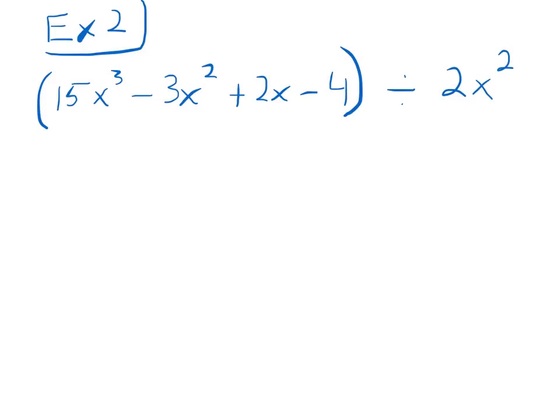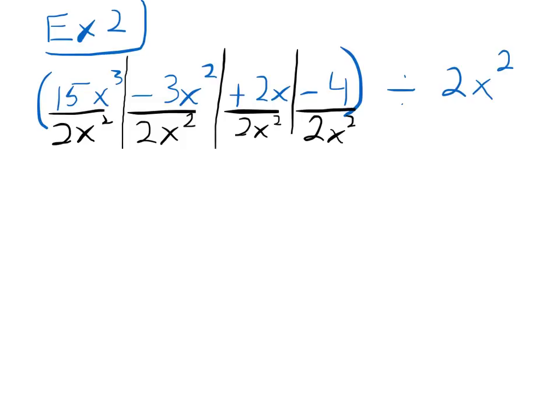Example 2 is 15x to the third power minus 30x squared plus 2x minus 4, all divided by 2x squared. All right. We are going to follow the exact same steps. First step, these steps just help us really organize our work, is we're going to separate the terms by drawing the bars before the addition and subtraction signs. I'm going to erase those, those don't need to be quite so long. And then we're going to divide each of these terms.